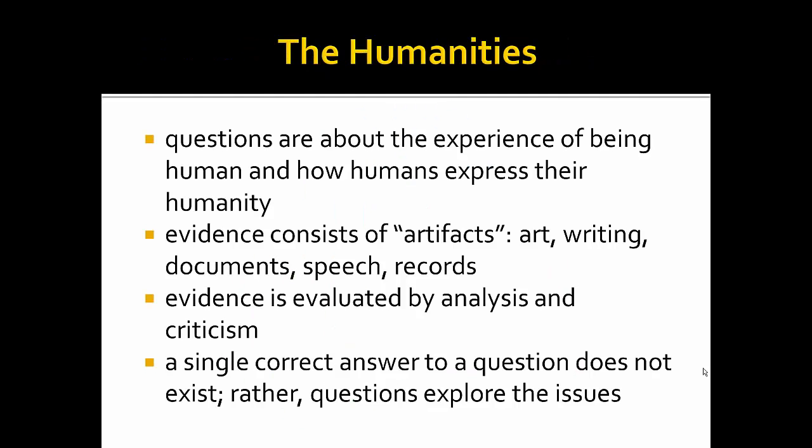First, let's look at the humanities. In the humanities, researchers develop questions about the experience of being human and how humans express their own humanity. Evidence consists of what we call artifacts: art, writing, documents, speech, and really any way in which humans record their ideas. Evidence is evaluated through analysis and criticism — not negative criticism, but a method of looking critically at the artifact for the purposes of analysis. Facts and truth are not always the same thing in the humanities. In our college, the humanities fields might approach the topic of murder in the following ways.